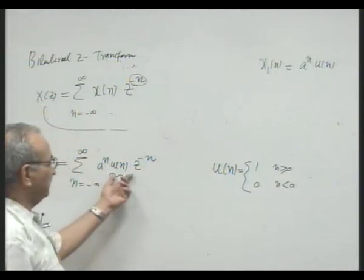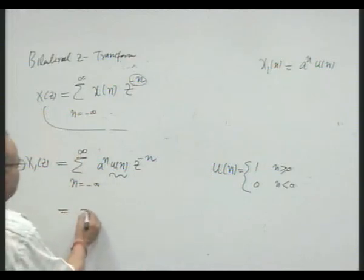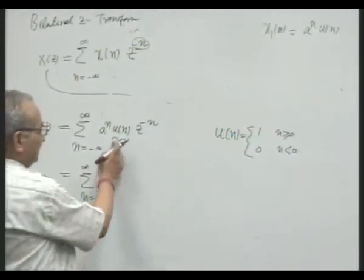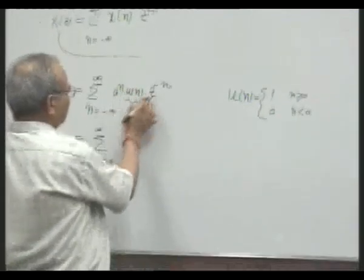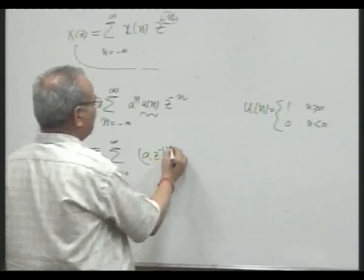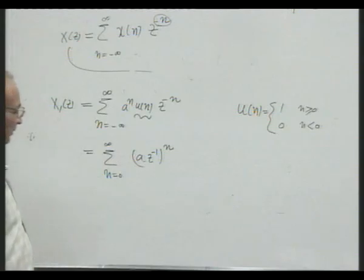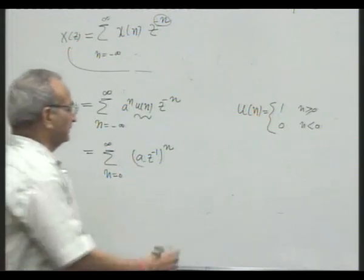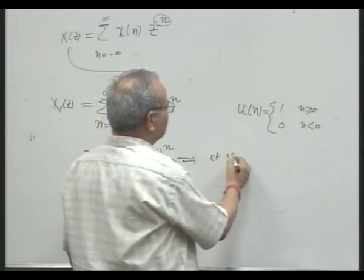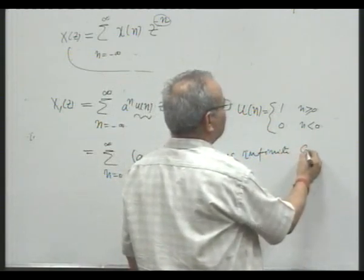So applying the definition of u[n], the summation now starts at n equal to 0 and goes to infinity. This becomes: combining the two terms gives (a·z^(−1))ⁿ. This is an infinite geometric progression (GP). The first term, corresponding to n equal to 0, is 1. The common ratio, at n equal to 1, is a·z^(−1).